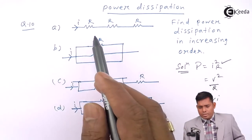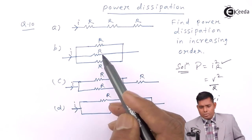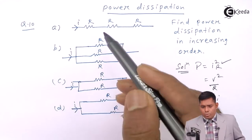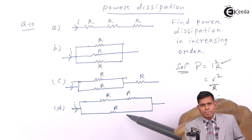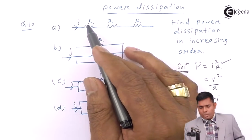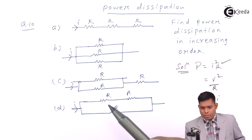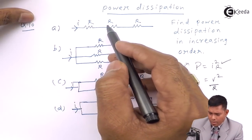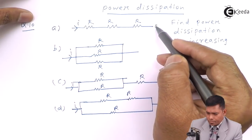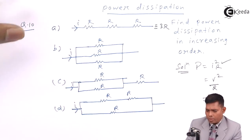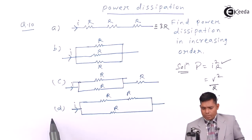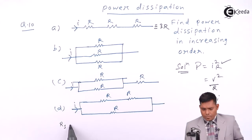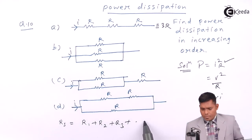R is not a single R here — there are three R's in each arrangement, but the configurations are different. So we will write the equivalent resistance of these four combinations. For the first one, this will be R + R + R, that is 3R. This is the equivalent resistance. We know the formula for series: R_s = R1 + R2 + ...